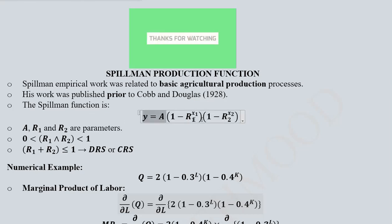This is the standard form of Spillman's production function. You can see that this is the output, y = A(1 - R₁^L)(1 - R₂^K), and A is the parameter. R₁ represents the relevance of the first input which is X₁ or labor, and R₂ represents the relevance of the second input X₂ or capital.